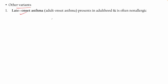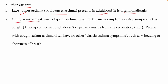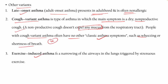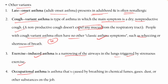Other variants of asthma include: late-onset asthma (adult-onset asthma), which is present in adulthood and is often non-allergic. Cough variant asthma has a main symptom of dry non-productive cough with no mucus production, and no other classic asthma symptoms like wheezing or shortness of breath. Exercise-induced asthma involves narrowing of airways triggered by strenuous exercise. Occupational asthma is caused by breathing chemical fumes, gases, dust, or other substances at work.